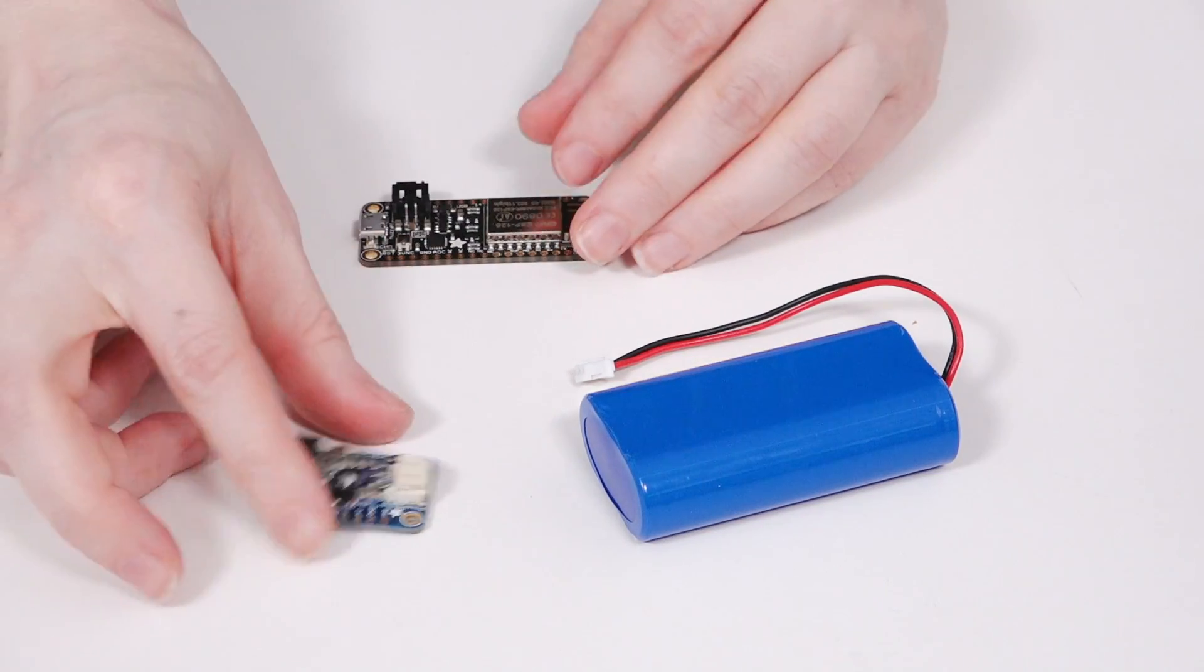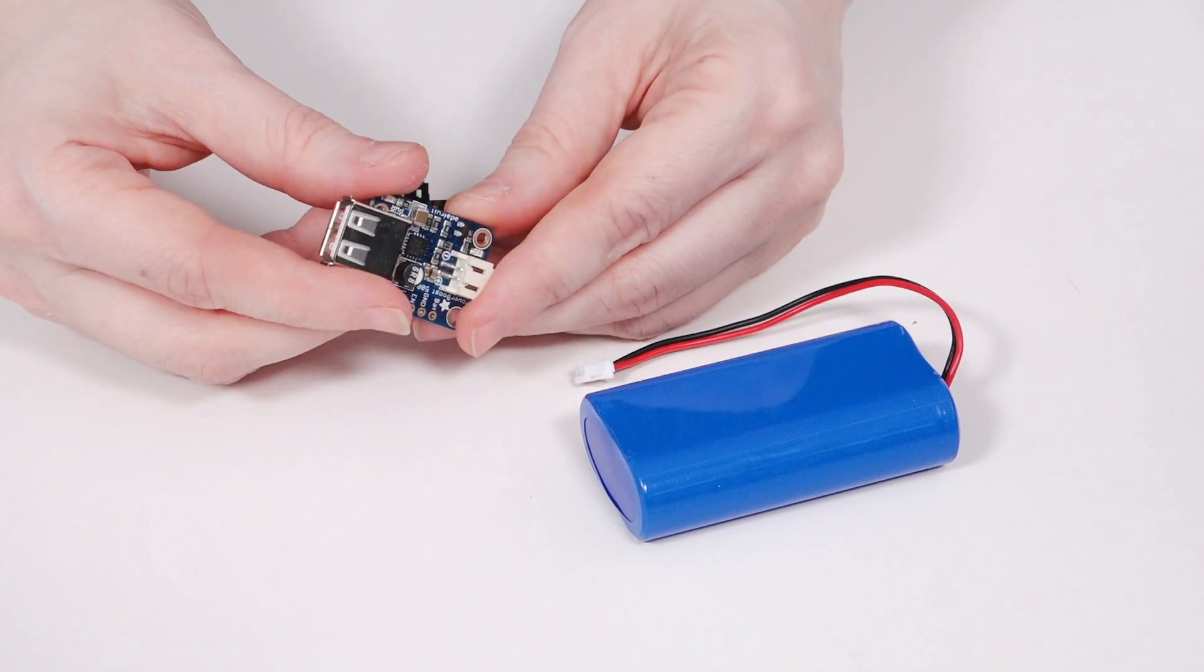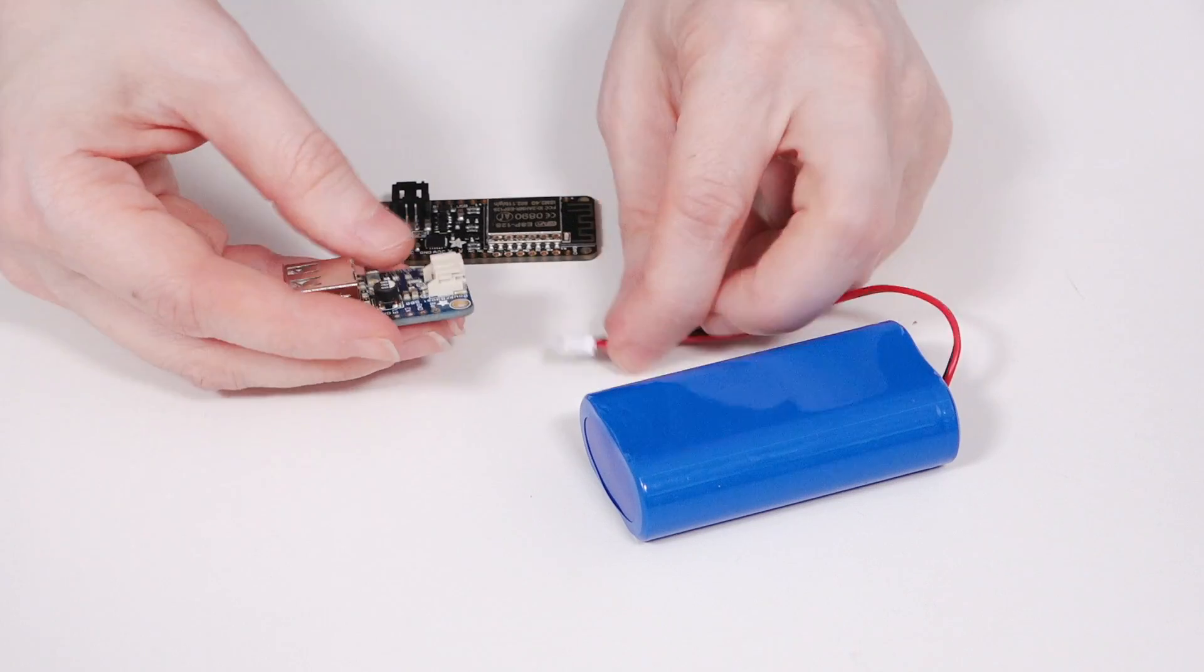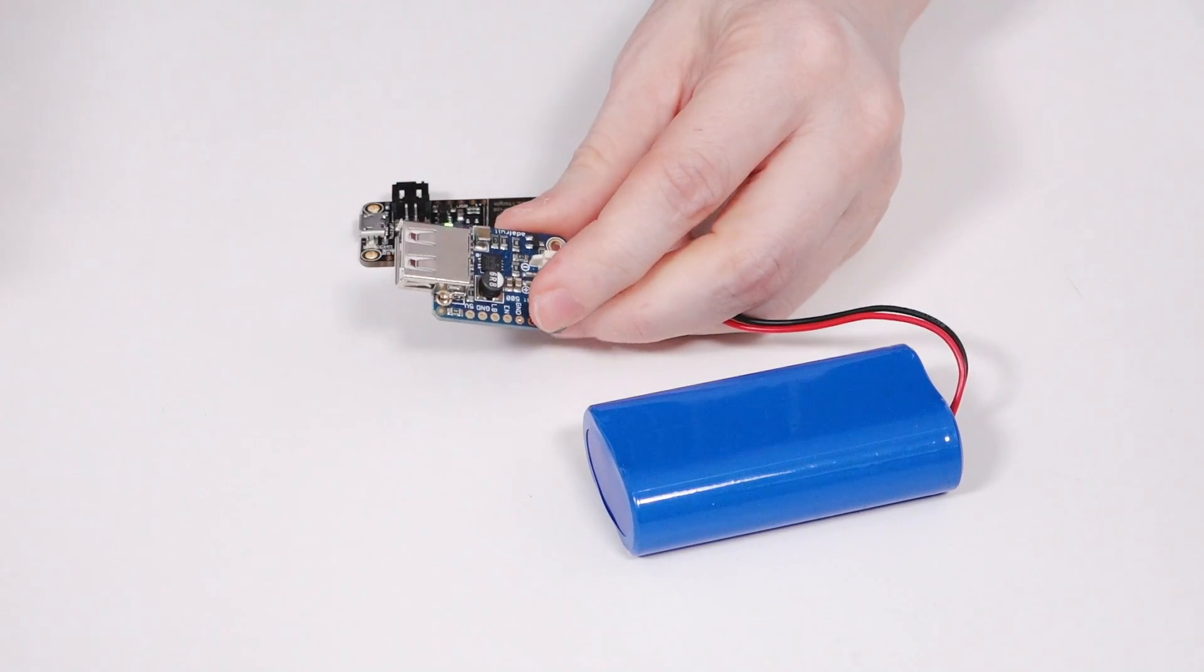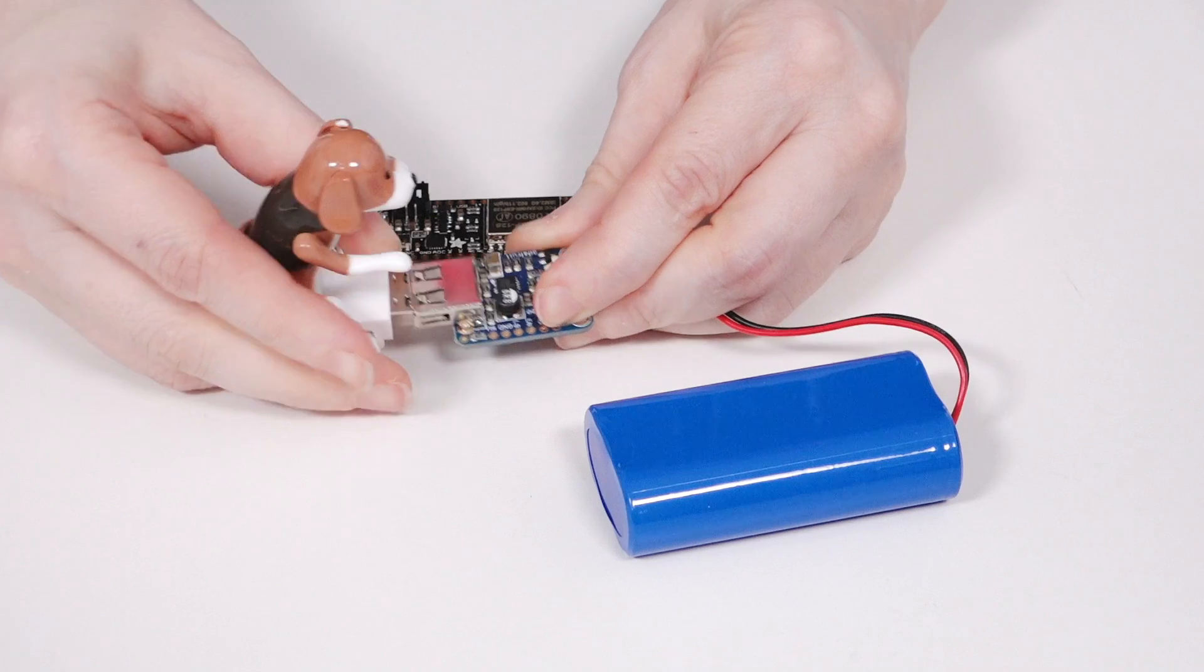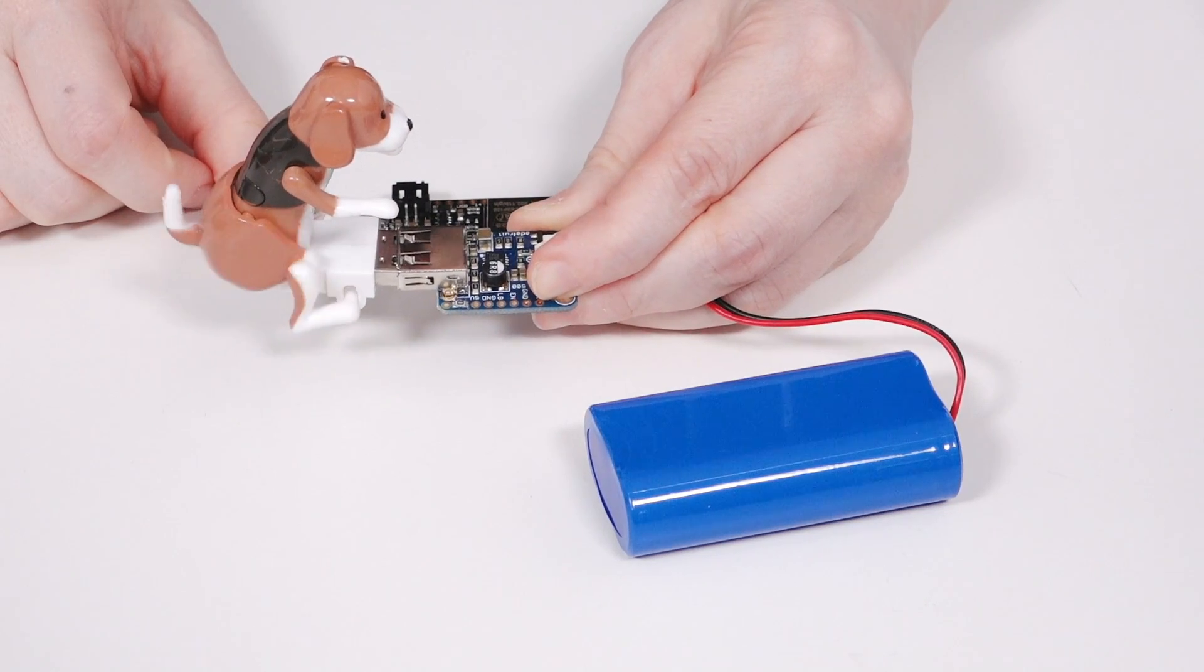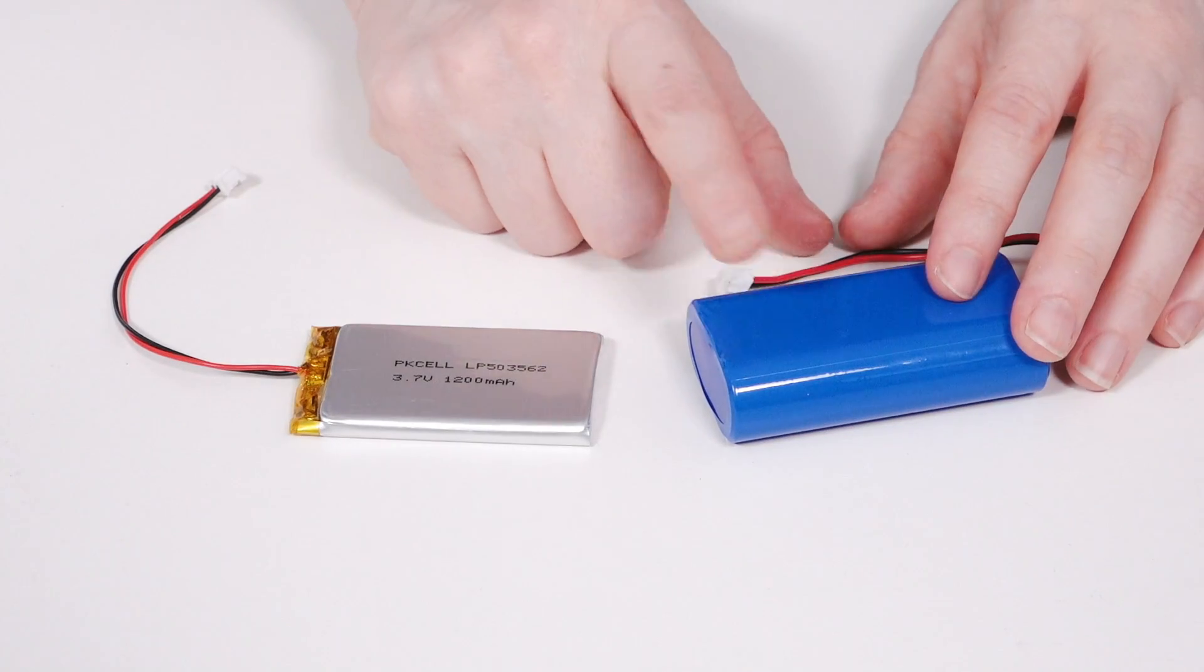If your device requires 5 volt power, you might need to boost the power up, like with this PowerBoost. This will convert the 3.7 volts from this battery to 5 volts USB.